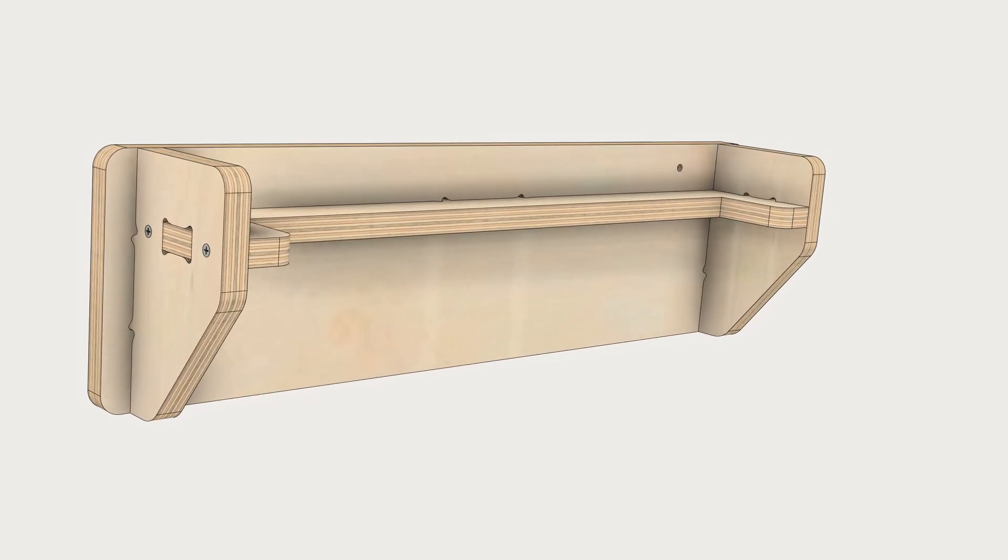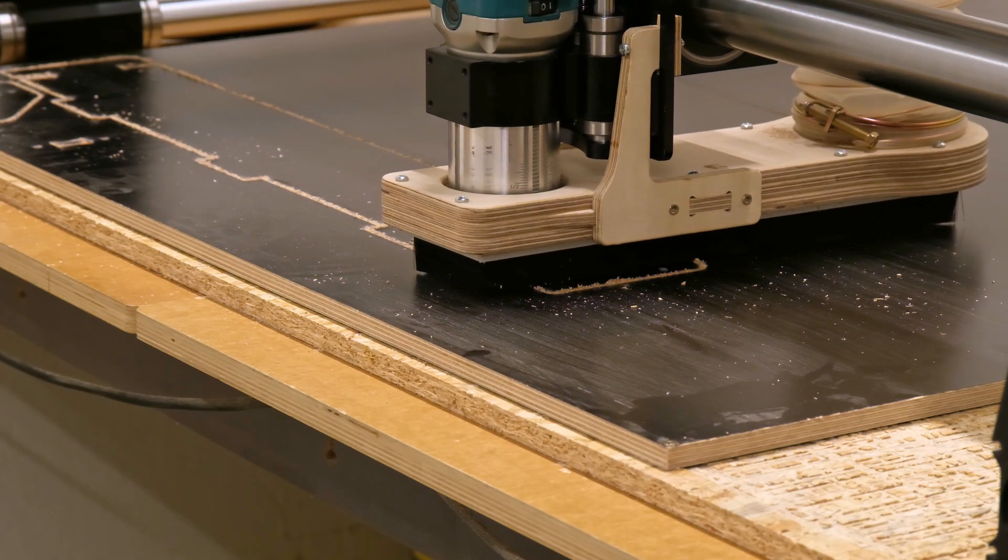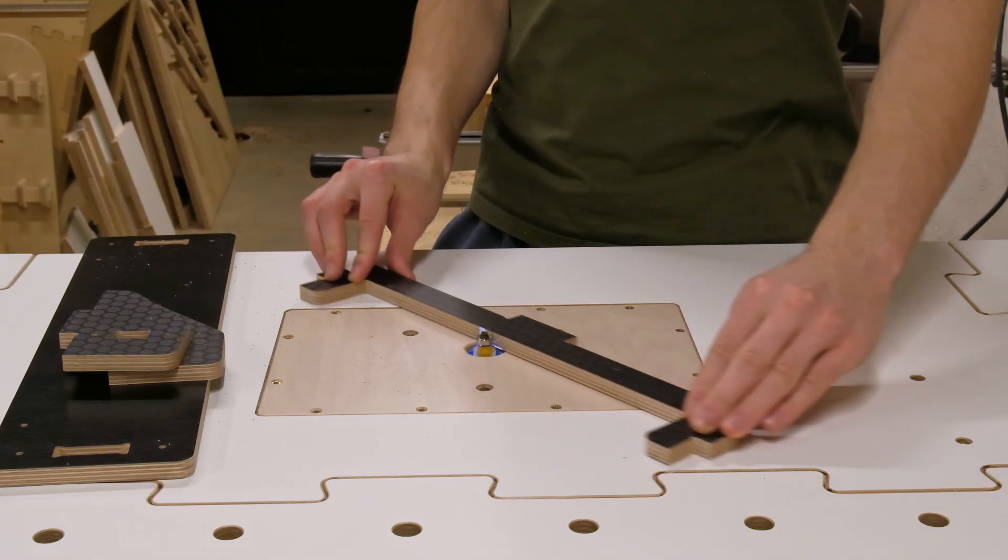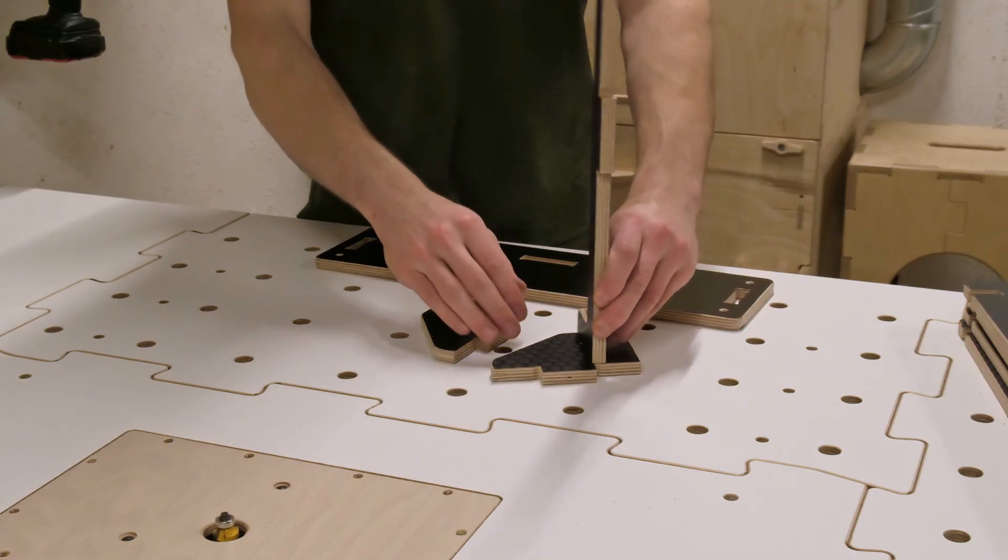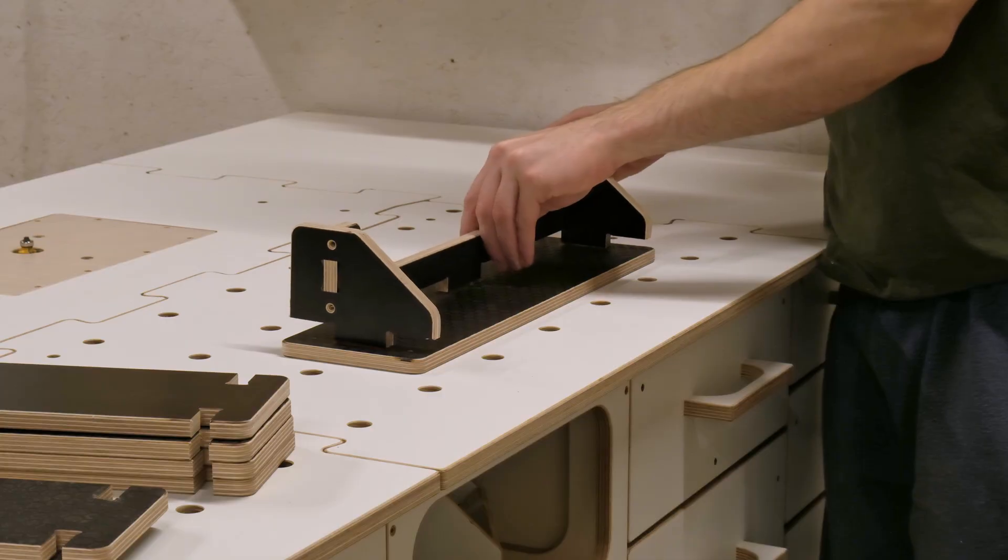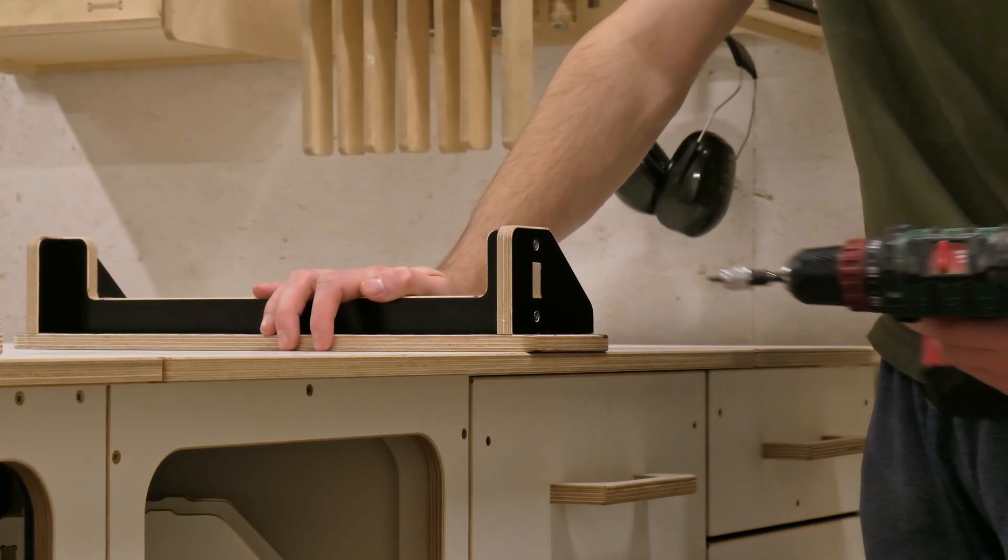For that we will make a simple wall shelf, similar to the sacrificial frame project, also joined using half-laps. After a quick CNC operation and a couple of passes with a trim router, we can grab the shelf parts between the supports, attach it to the back panel and secure it with a few screws.